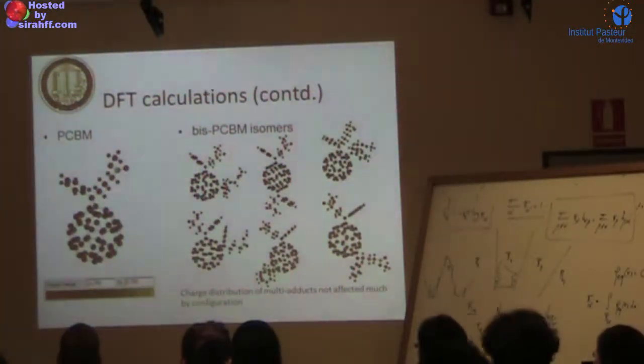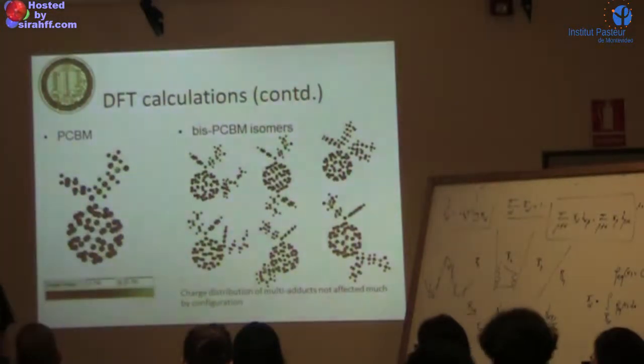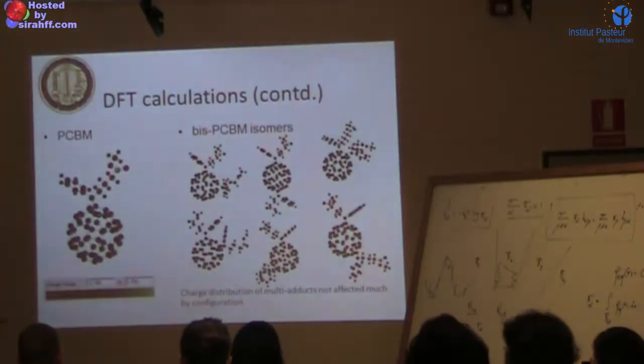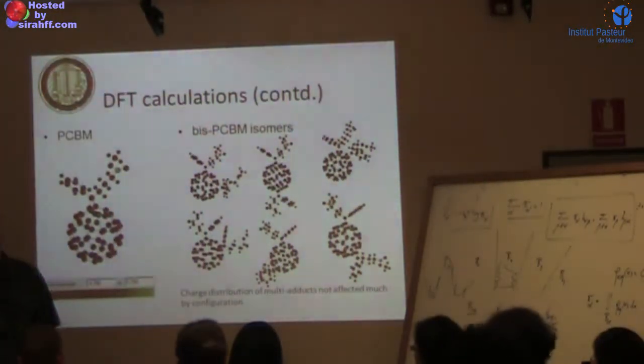This is how PCBM looks like - this is C60 and the side cage, colored by charge. Black means it's actually neutral. The good news is the side group doesn't charge the cage. That means as we're interested in PCBM isomers, we can use the same model for different isomers.